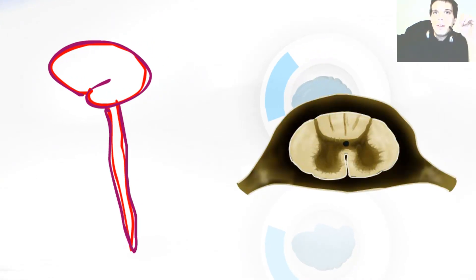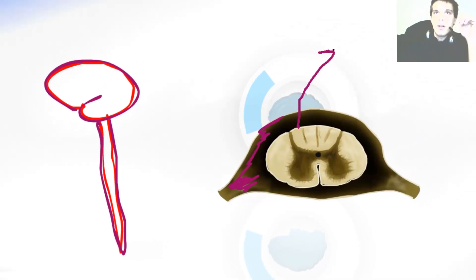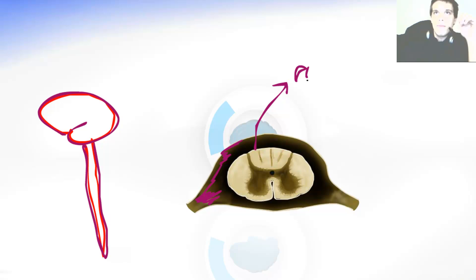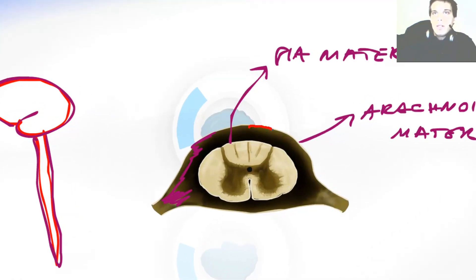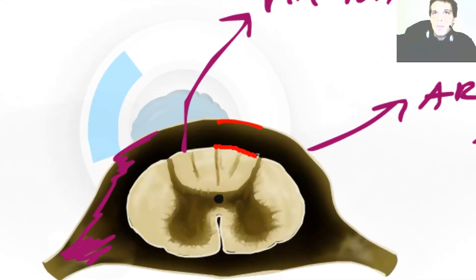Then comes the arachnoid mater. This is the arachnoid mater, and the white structure beneath it was the pia mater. The cavity between the arachnoid mater and the pia mater is called the subarachnoid cavity.